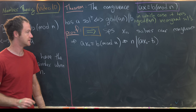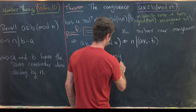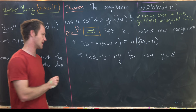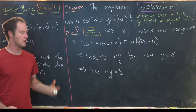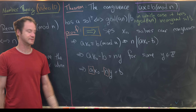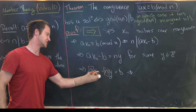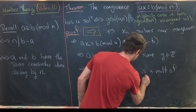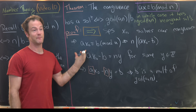That's the definition of congruence modulo n. By divisibility, ax₀ minus b equals n times y for some integer y. Rearranging, ax₀ minus n·y equals b. Linear combinations of a and n are always multiples of gcd(a, n) — something we proved earlier. So b is a multiple of gcd(a, n), meaning gcd(a, n) divides b. That finishes this direction.